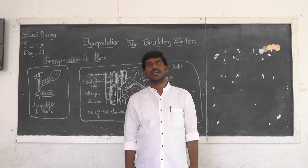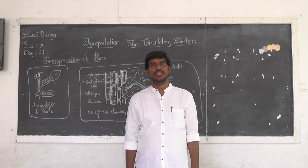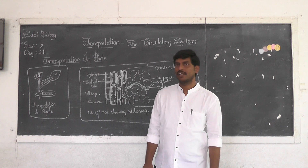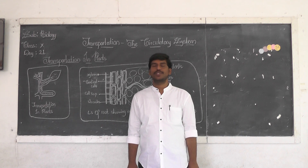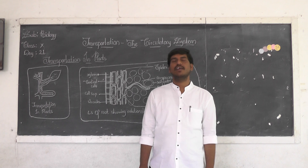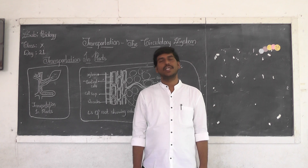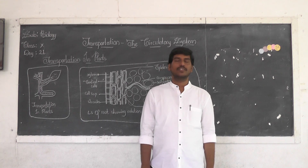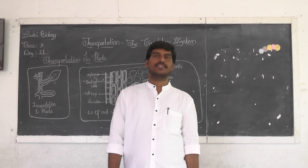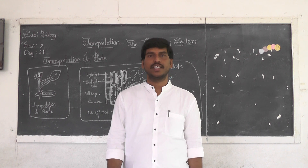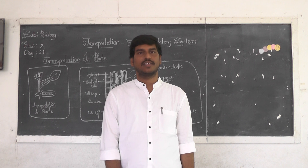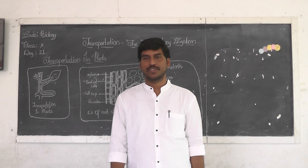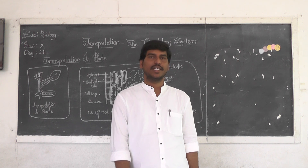I hope children you are ready with your home assessment given in the last class. The first question was: write briefly about the revolution of transport system. The second question was: write down the difference between open type and closed type of circulatory system. So the previous class covered the transport system or circulatory system of human beings and how the transport system is different in different organisms.